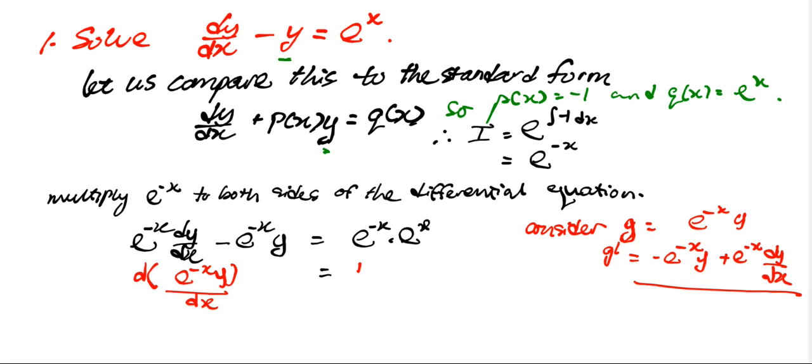So now we integrate both sides with respect to x. Because this is the derivative, when you integrate that, we only get e to the power of negative x y. Over here is x plus c.